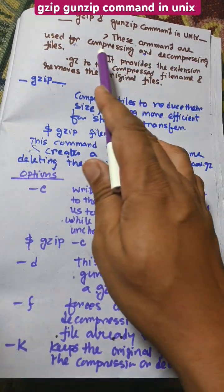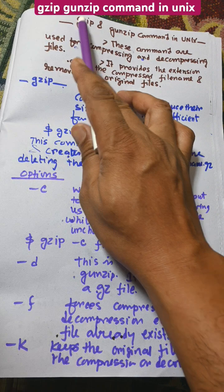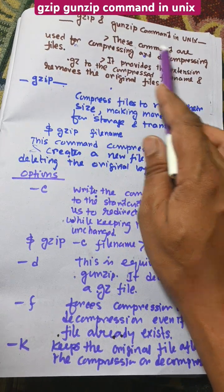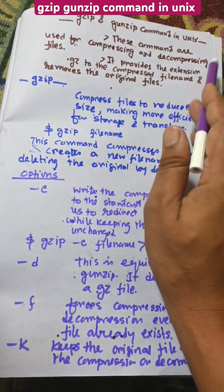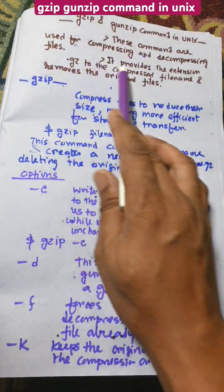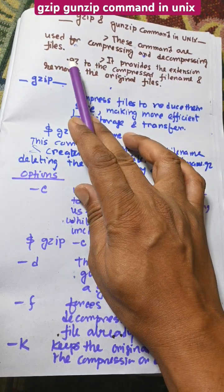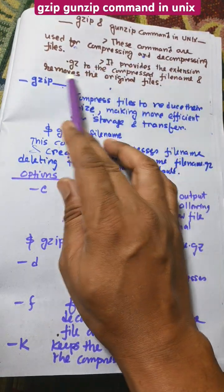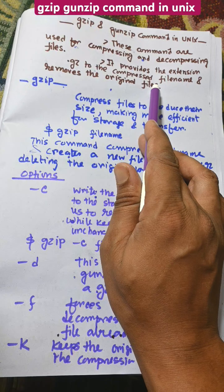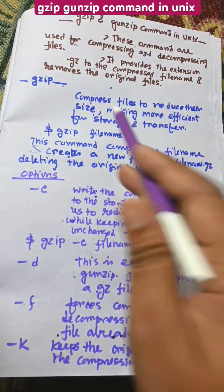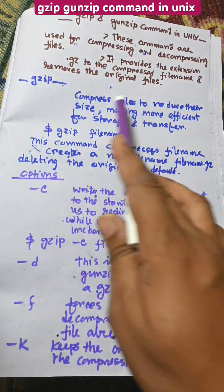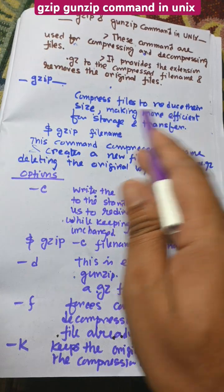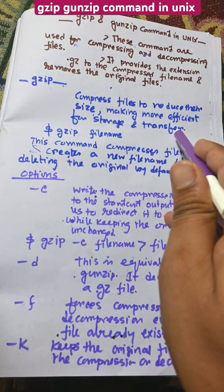These commands are used for compressing and decompressing files. gzip is used for compressing and gunzip for decompressing. It provides the .gz extension to the compressed file name and removes the original file. It compresses files to reduce their size, making them more efficient for storage or transfer.